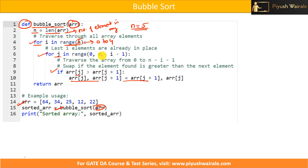For j in range 0 to n minus i minus 1: for the first iteration i is 0 and n is 5, so 5 minus 0 minus 1 equals 4. Range 0 to 4 iterates from 0 to 3, not 4, because of the n minus 1. So the inner for loop iterates from index 0 to 3.